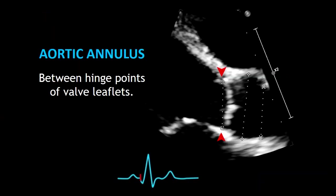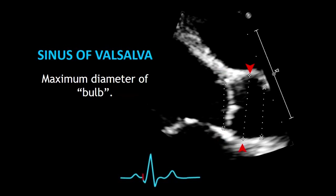The first measurement, shown here inside the red arrows, is the aortic annulus diameter. You can measure this diameter between the hinge points of the valve leaflets. Now measure the sinus of Valsalva, or aortic root — you can recognize it because it's the maximum diameter of the bulb.